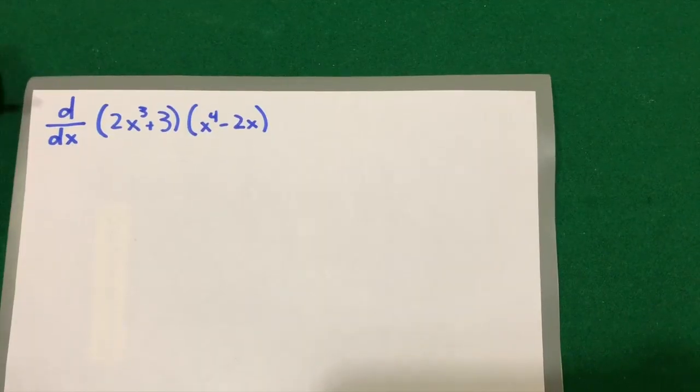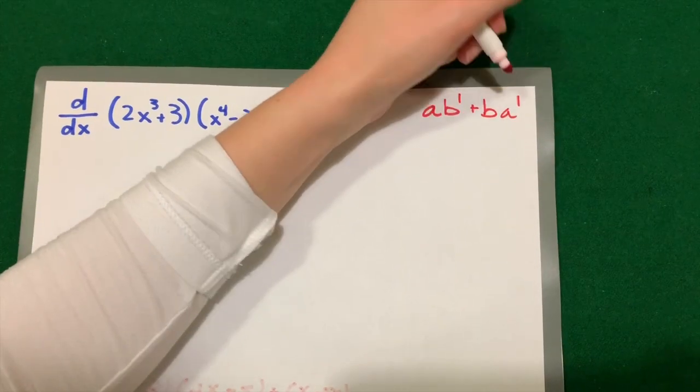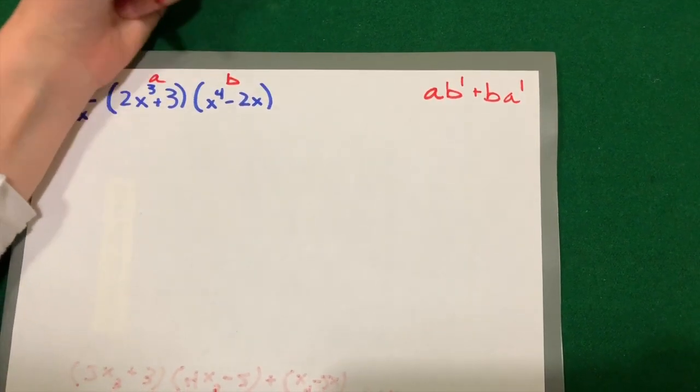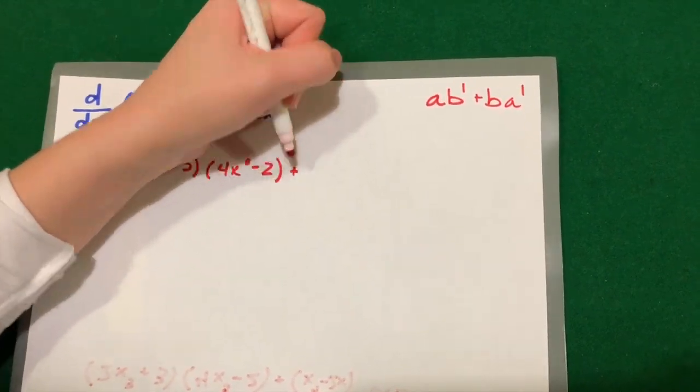You use product rule for differentiating problems where one function is multiplied by another. By the way, has anyone seen calculator number 11? The rule for product rule is A regular B prime plus B regular A prime. That's your A and that's your B.